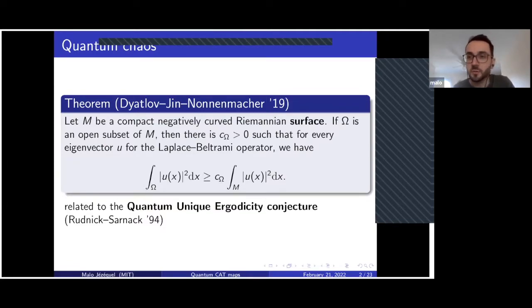The main focus of our work is that the result by Dyatlov-Jin and Nonnenmacher is restricted to the case of surfaces, valid only in the two-dimensional case, because the proof is based on the application of the fractal uncertainty principle, which is a result of harmonic analysis only known in a tractable way in the one-dimensional case.